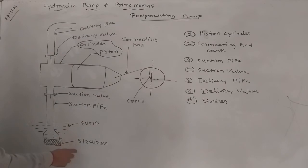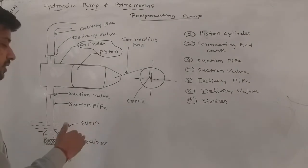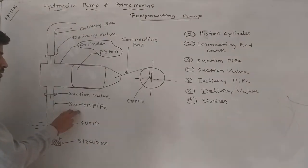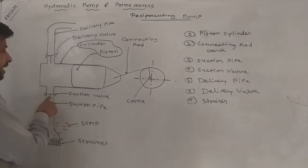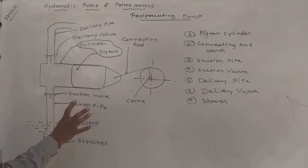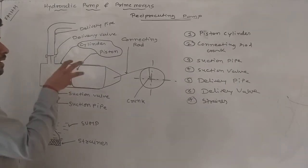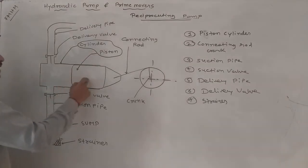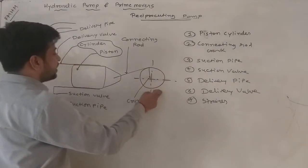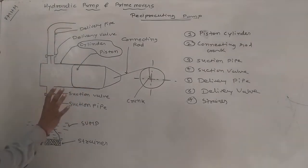There are 8 elements: the sump (water level), strainer, suction pipe, pump connected to piston cylinder, suction valve (non-return valve). The main working principle is reciprocating motion — the piston is connected to a crank joint, and the cylinder is smooth. Above the pump is the delivery reservoir, delivery pipe, and non-return delivery valve.